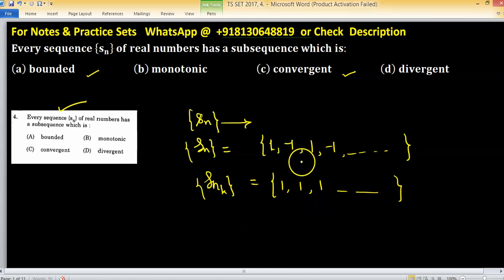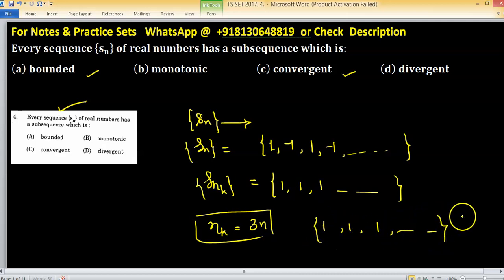If I take multiples of 3, nk is multiple of 3, then this will be 1, 1, 1, and so on. So this sequence is again convergent.